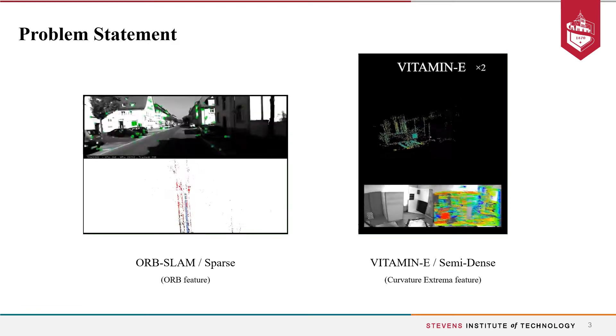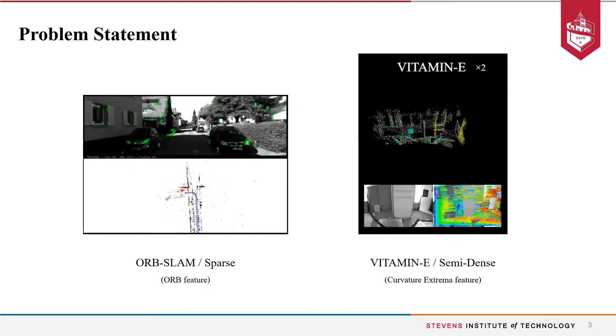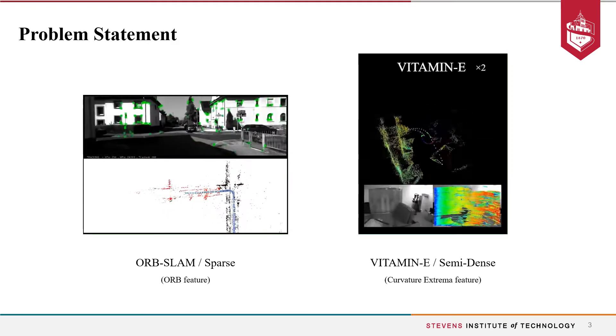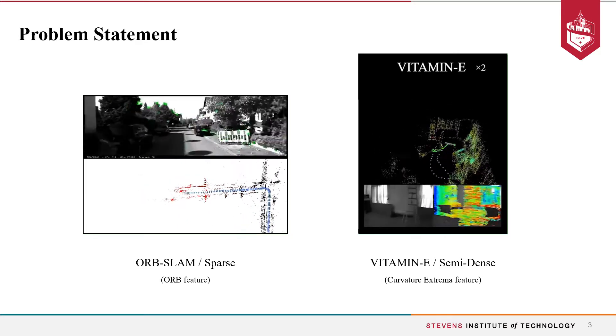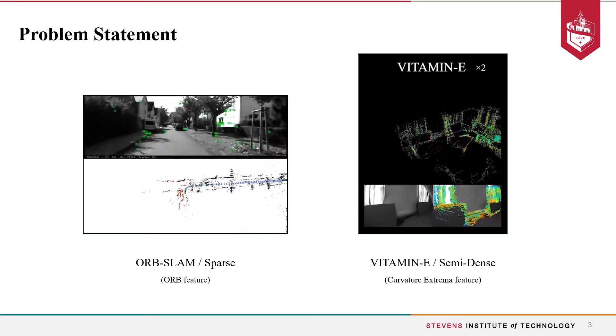Popular indirect methods track for sparse or semi-dense handcrafted features and recover camera poses as well as feature point geometry by minimizing the reprojection error.